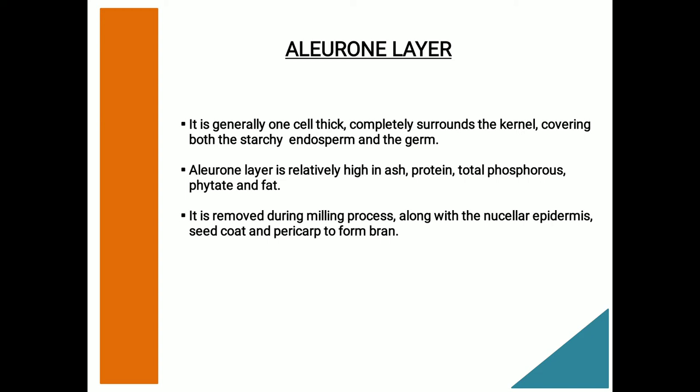Next to the seed coat and nucellar epidermis is the aleurone layer, which is one cell thick and completely surrounds the kernel, covering both the starch-rich endosperm and the germ. From a botanical standpoint, it is the outer layer of the endosperm. It is removed during milling along with the nucellar epidermis, seed coat, and pericarp to form what the miller calls bran. The aleurone layer cells are heavy-walled, cube-shaped, and free of starch. The aleurone layer is relatively high in ash, protein, phosphorus, phytate, fat, and niacin content.